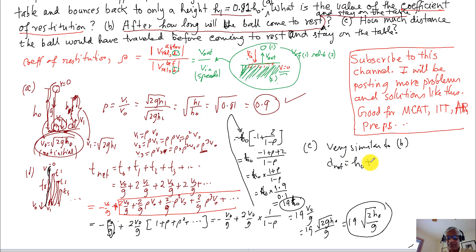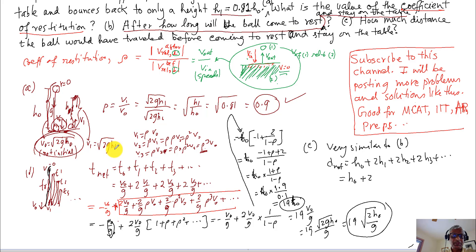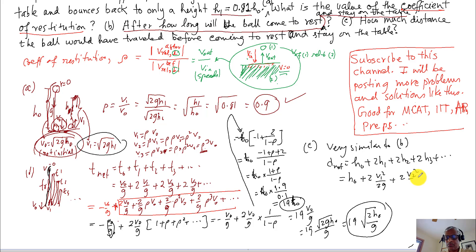The total distance is: d_net = h0 + 2h1 + 2h2 + 2h3 + ... Using h = V²/(2g), we get h1 = V1²/(2g), h2 = V2²/(2g), and so on. So d_net = h0 + 2·V1²/(2g) + 2·V2²/(2g) + 2·V3²/(2g) + ..., where the factor of 2 cancels with the denominator.